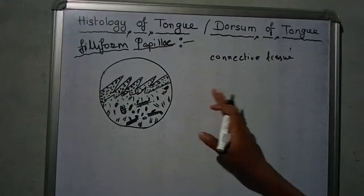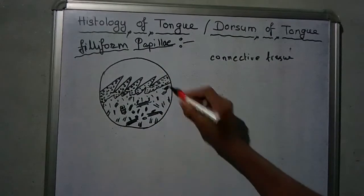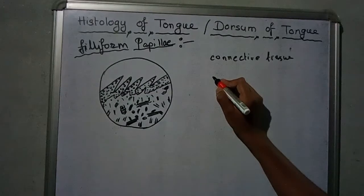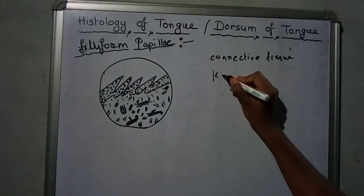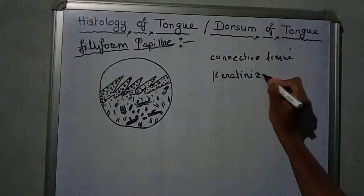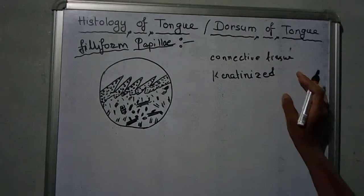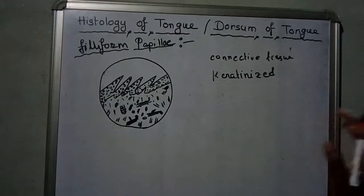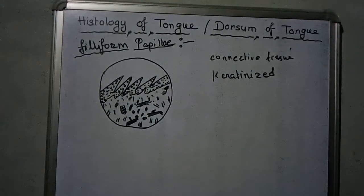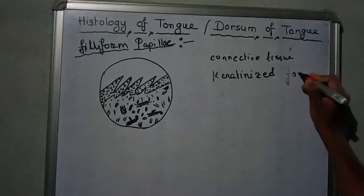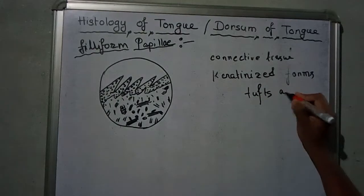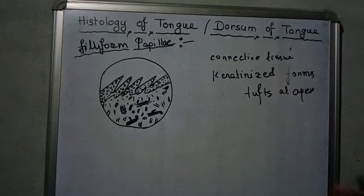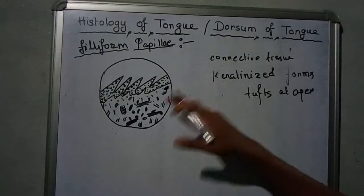The covering epithelium of the filiform papillae is keratinized. It is keratinized and forms ducts at the apex of the dorsal filiform papillae. Importantly, the filiform papillae do not contain taste buds.